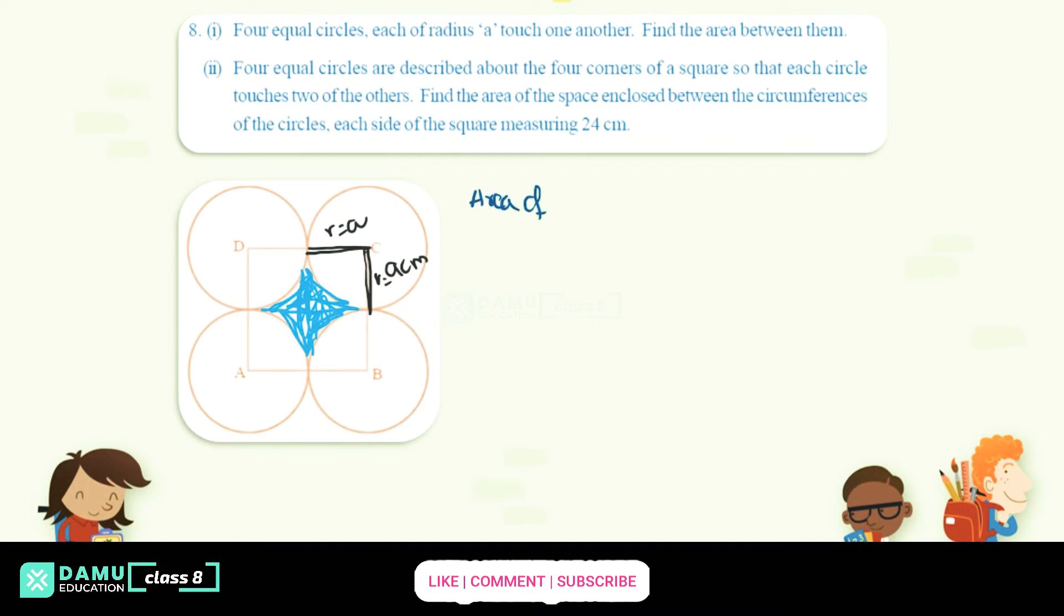So actually, how to find is, let's take area of circle and area of square. Area of shaded region or area between them equals area of square minus area of circle.